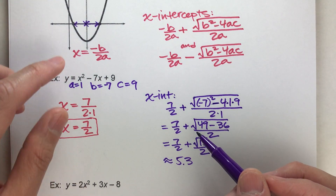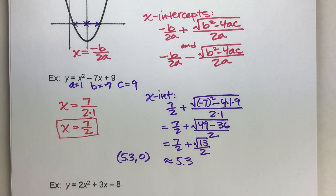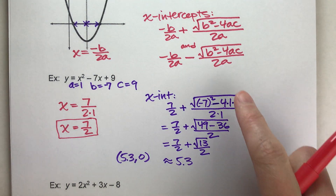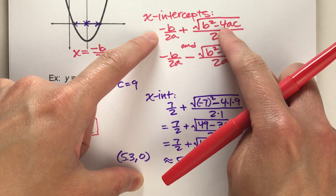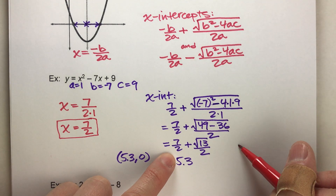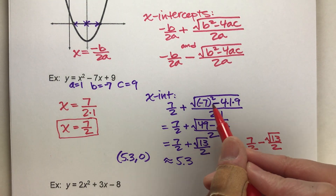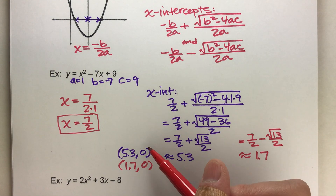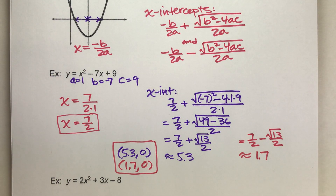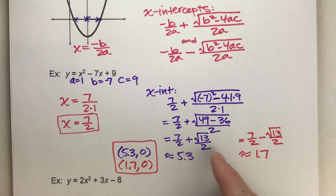So the first x-intercept is about 5.30. For the second x-intercept, we don't need to go through all that again — the only difference is we subtract instead of add. So it's 7 halves minus the square root of 13 divided by 2, which comes out to about 1.70. Those are our two x-intercepts. Notice there's no way we could have found these by factoring, because the answers are irrational numbers — decimals that go on forever. That's why we need this formula.